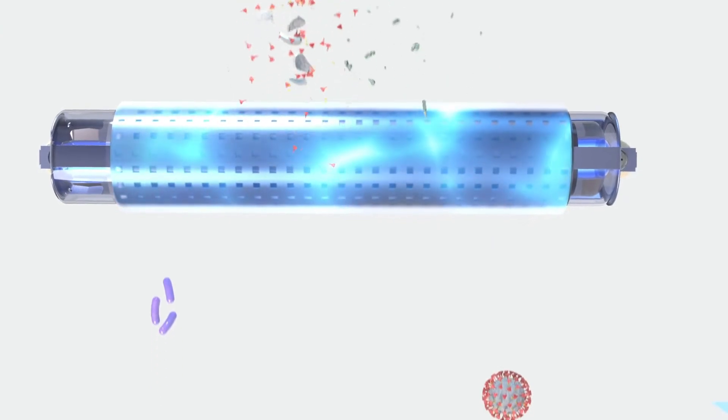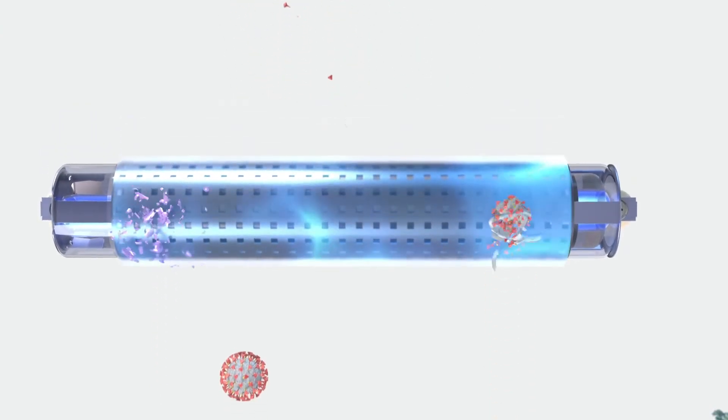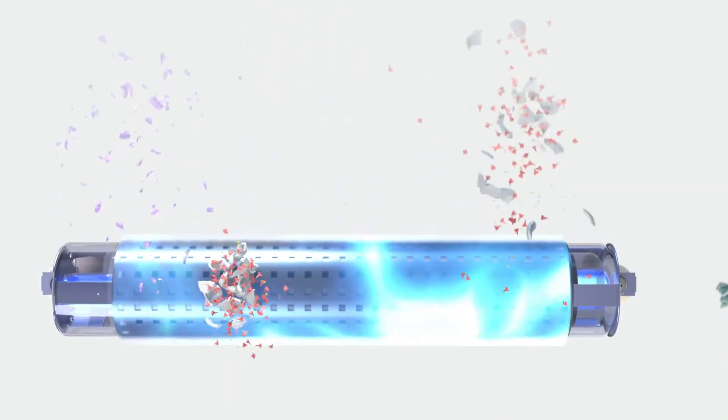Nanostrike's effectiveness lies within its ability to kill and deactivate even the smallest nano-sized pathogen on contact. As microorganisms pass through the Nanostrike plasma field, they are rendered inert and deactivated. Therefore, only harmless dead pathogen debris emerges from the field.